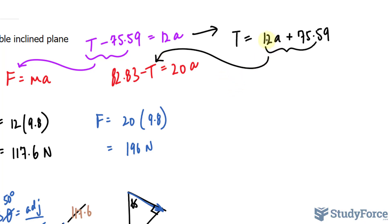So, substituting that expression into there, I have 82.83 minus this whole expression, which means minus 12a minus 75.59 is equal to 20a. Bringing all the like terms to one side, I have 82.83 minus 75.59 is equal to 20a plus 12a. See how minus 12a becomes positive 12a? Adding these up, we get 32a.